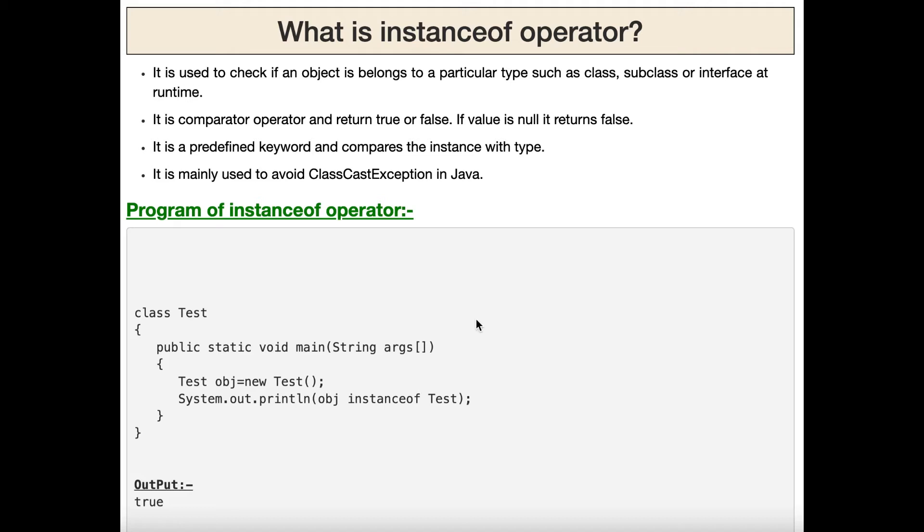It is a comparator operator and returns true or false. If an object is a type of class, if it is an instance of a class, it will give you true. If it does not belong to a class, if it's not an object of that class, it will give you false. If value is null, it returns false.